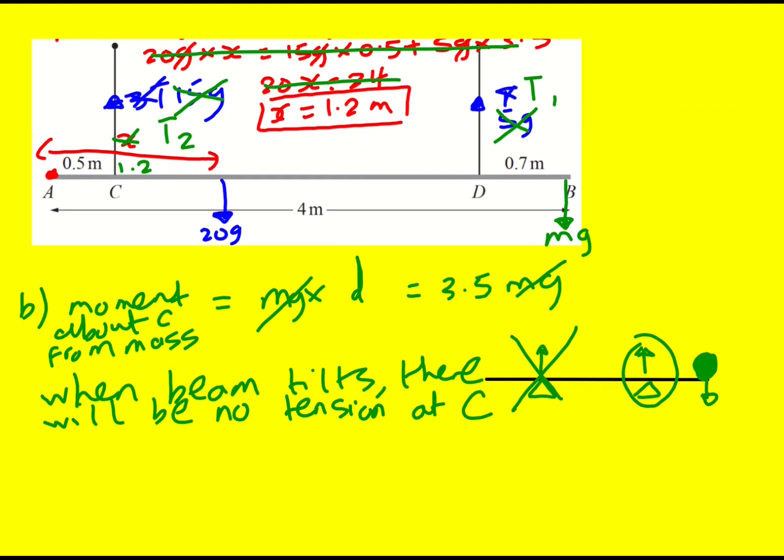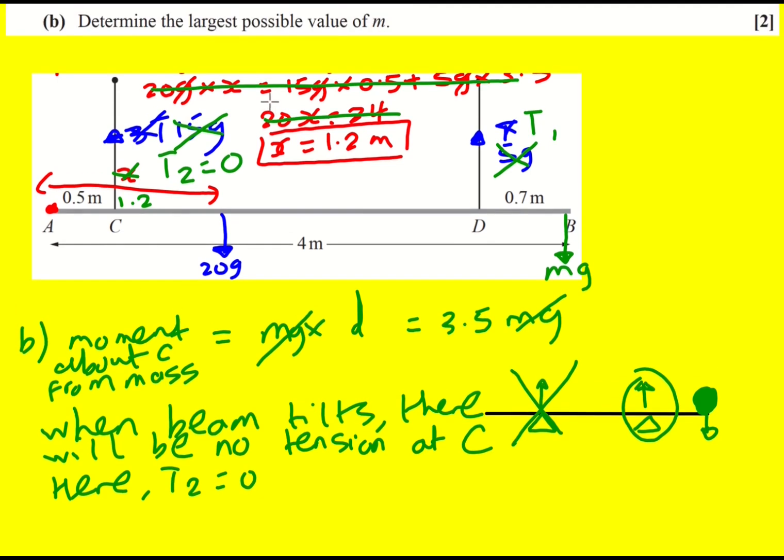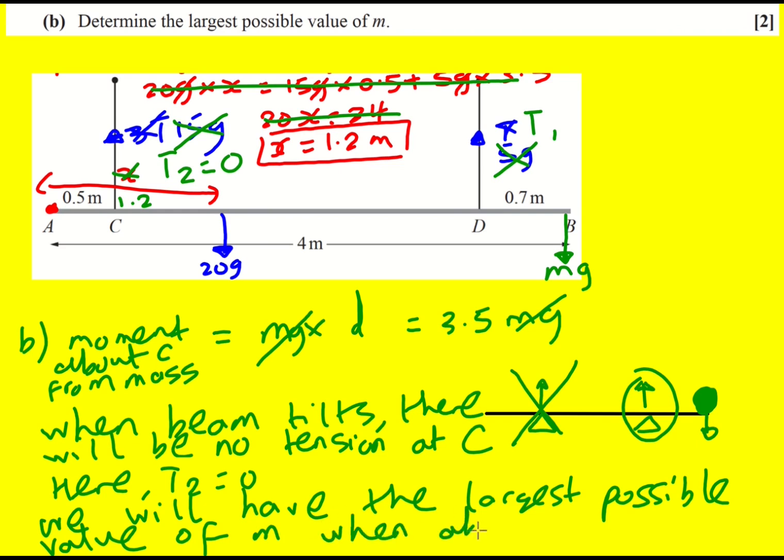And so T2 here is going to be zero. And I should just say it's going to tilt at the moment because we're asked for the largest possible value of M. So we will have the largest possible value of M when about to tilt. Okay, so we've only got three forces on the system. We've got the weight, which we still know where that is acting. We've got this new mg, which we don't know what M is. And then we've got T1, we don't know what that is either.